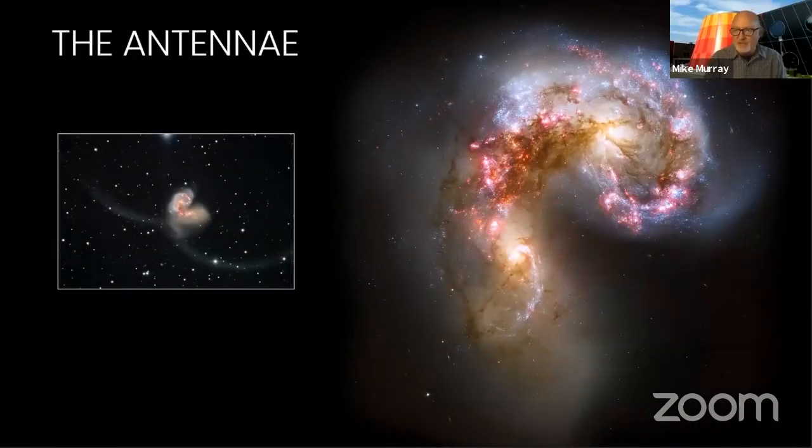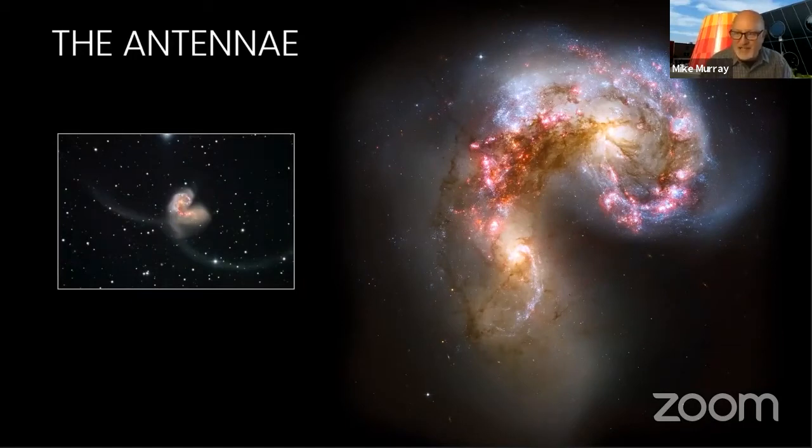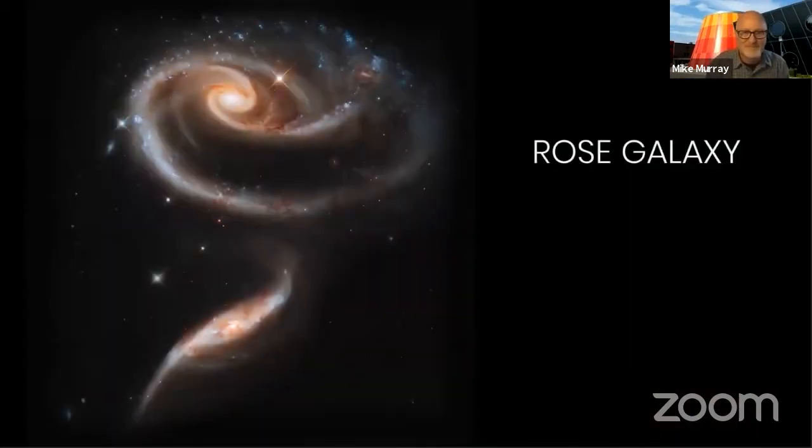These two spiral galaxies started to interact a few hundred million years ago, making the antenna galaxies one of the nearest and youngest examples of a pair of colliding galaxies. Nearly half of the faint objects in the antenna image are young clusters, containing tens of thousands of stars. It's kind of like a fireworks of star formation, when you look at all the pinks and the blues. Galaxy interactions are not always the grand collisions seen in the antenna galaxies. These two interacting galaxies have produced less pronounced distortions in each other's shape, but they do kind of create an interesting example of what looks like a rose and a stem. Two spiral galaxies that take hundreds of millions of years to slowly interact.